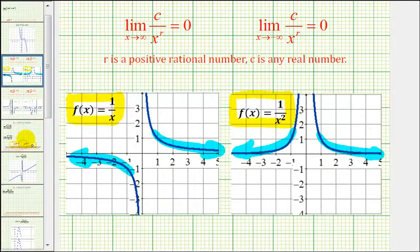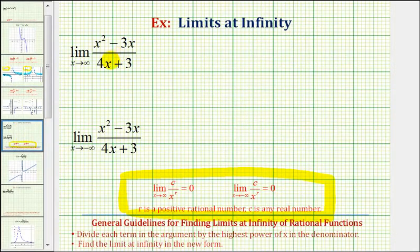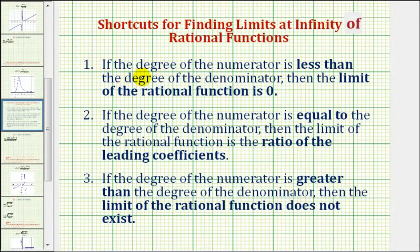Going back to our two examples, we can tell a lot about the limits at infinity of rational functions by looking at the degree of the numerator and denominator. First, if the degree of the numerator is less than the degree of the denominator, then the limit of the rational function is always going to be zero as x approaches positive or negative infinity.